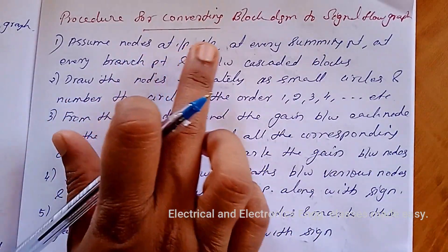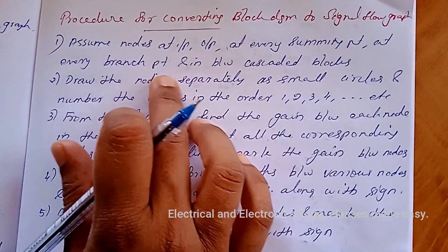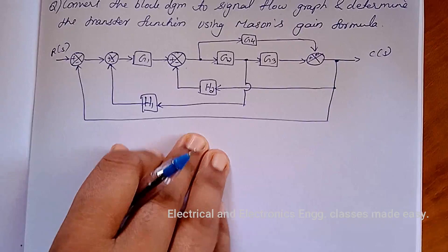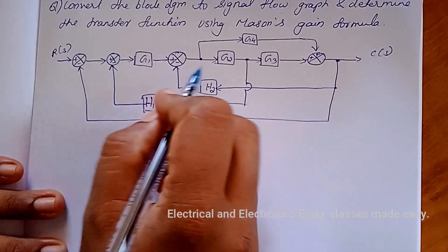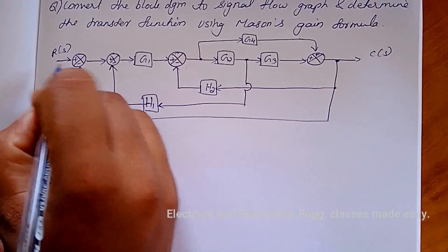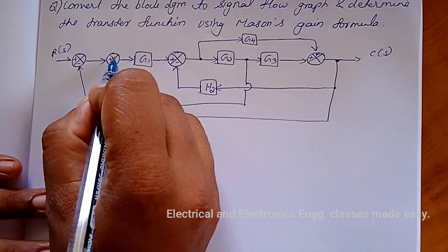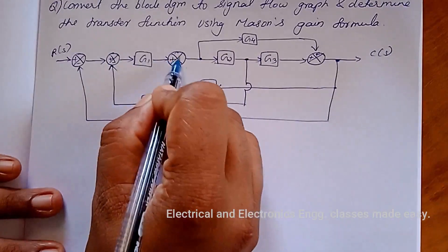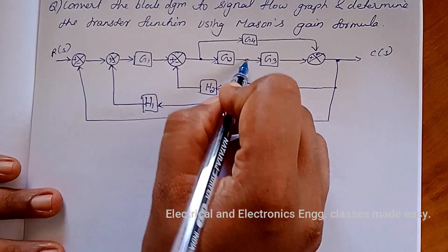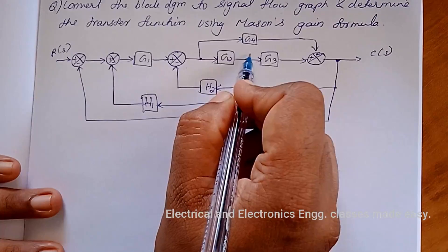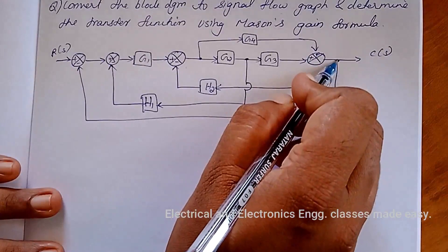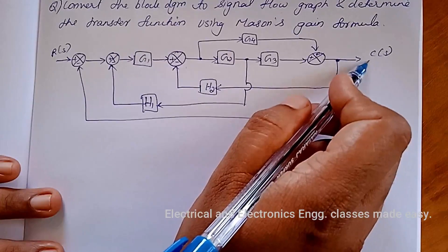First, we assume nodes at input, output, at every summing point and branch point, and in between cascaded blocks. So here we mark the nodes: this is the input, so there is one node; then the summing point is the second one; then the third; the fourth; and this is the branch point, so the fifth; again here there is a branch point, the sixth; then there is a summing point, the seventh; then the eighth; and this is the output, so the ninth node.